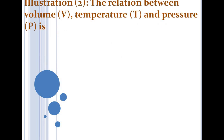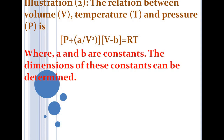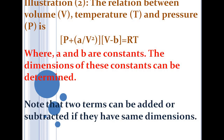Let's see a second example for the determination of dimensions of physical constants. The relation between pressure p, volume v, and temperature T of a gas is given by the Van der Waals equation: (p + a/v²)(v − b) = RT, where a and b are constants. Note that two terms can be added or subtracted only if both have the same dimensions. So p and a/v² must have the same dimension, and v and b must have the same dimension.